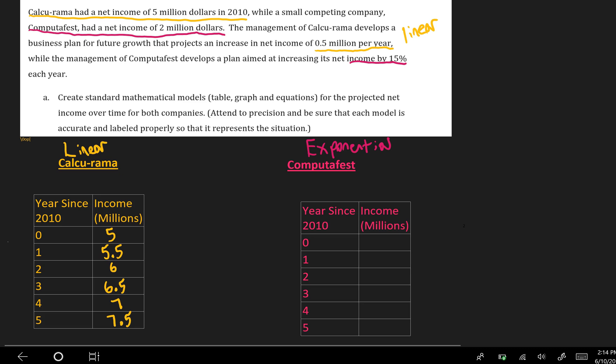Whereas Computafest is going to be starting at $2 million, it's a little bit smaller, and then multiplying by 1.15 for the 15%. So anytime I have a scenario where they give me a growth or decrease by a percentage, I know that this is a situation of exponential growth or decay because of the percentage. So we have 2 times 1.15 is 2.3, multiply that by 1.15, and that's 2.645. I'll go to the nearest hundreds place, so 2.65 times 1.15 is going to be 3.04, and then 3.498, which rounds up to 3.50, and then 4.0.